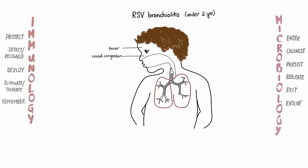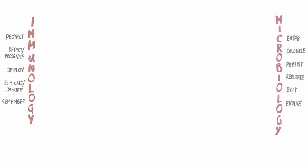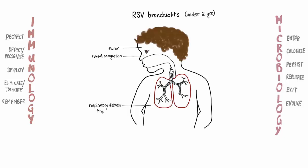You can see right away when you first meet this child that he's irritable, breathing faster than normal, and it looks like he's working pretty hard to breathe. The muscles of his neck and abdomen are clearly trying to help out, even his nostrils are flaring, and there's clear rhinorrhea, or fluid, running out of his nose.